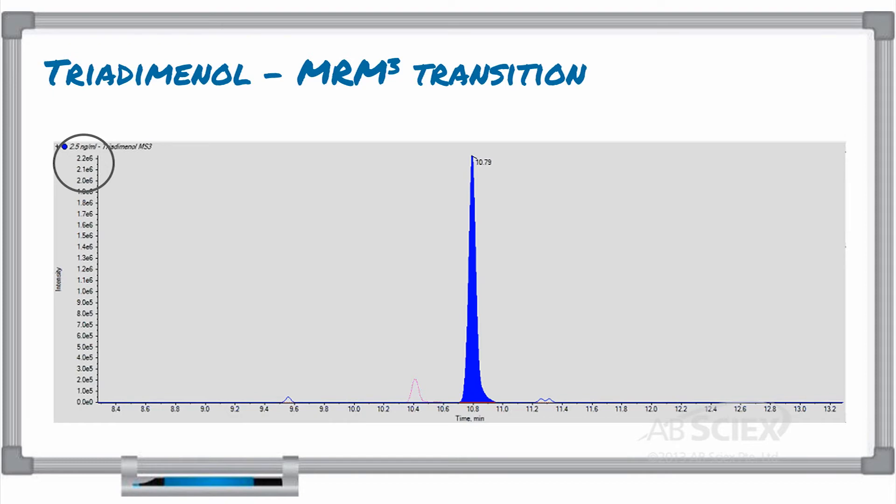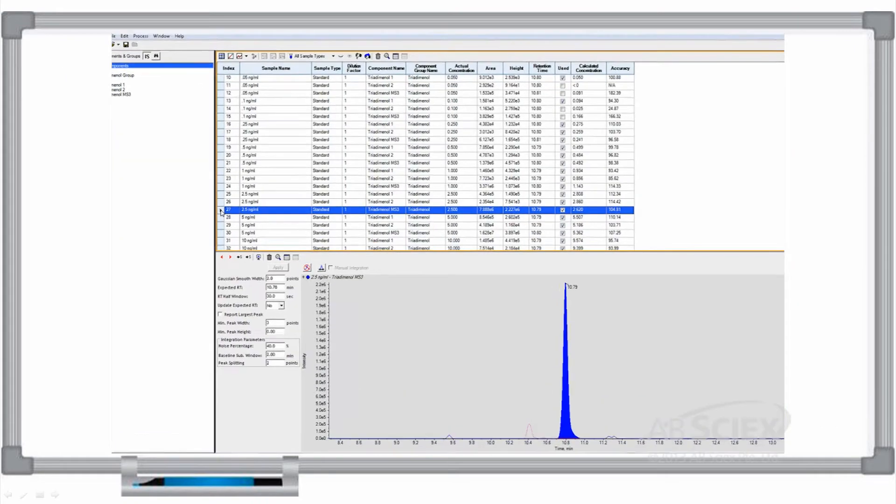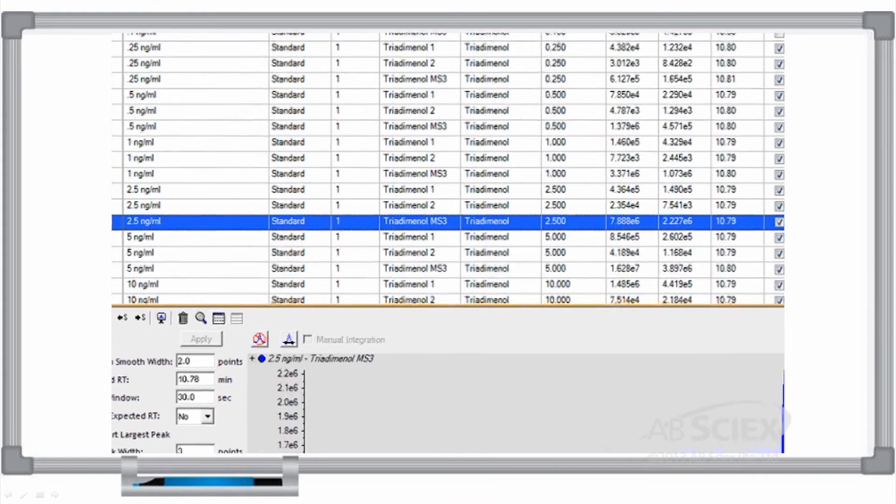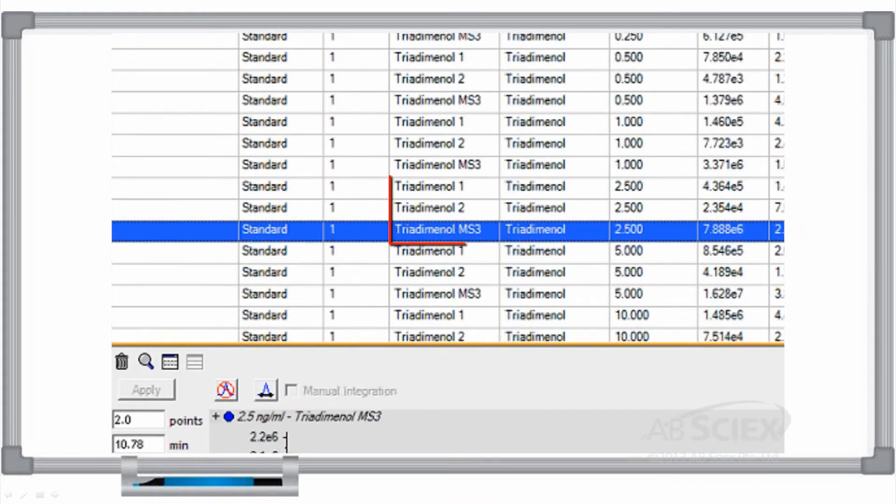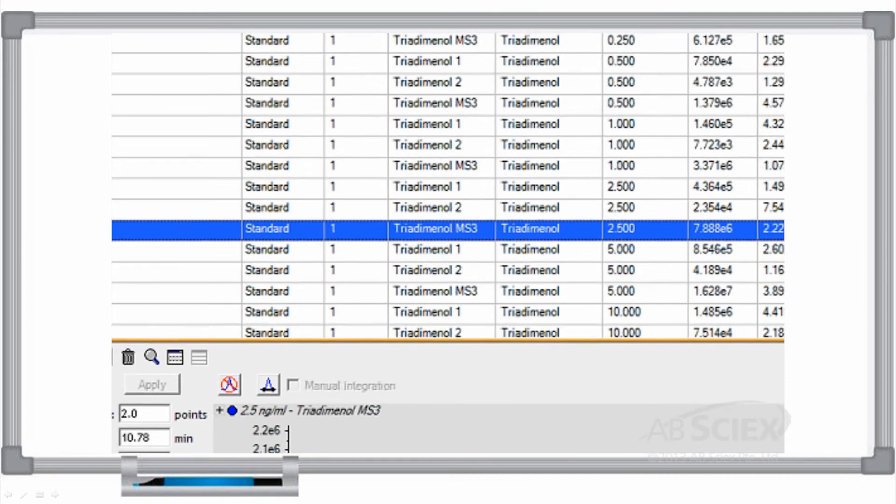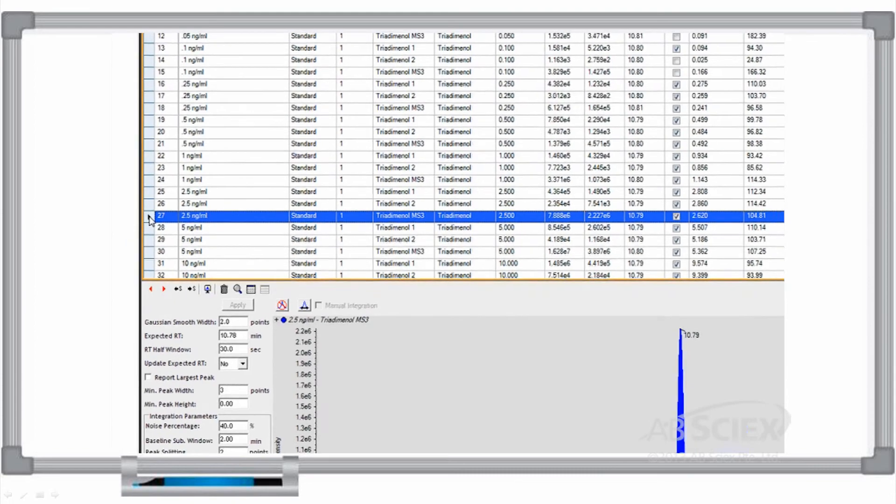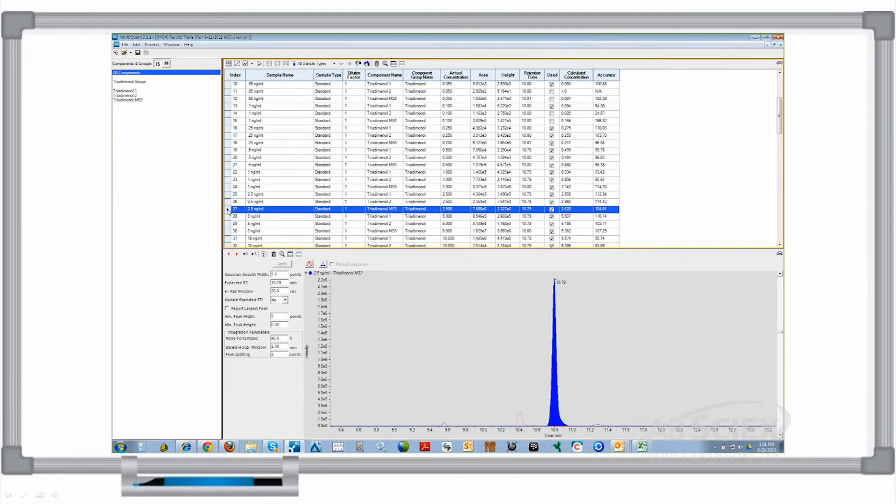Keep in mind that these MRM-cubed data can also be used to perform quantitative analysis. In the example of triadminol, we monitored two MRM transitions and one MRM-cubed transition in our analysis. Here we show the multi-quant results table we created which contains the results for our batch for both MRM transitions and MRM-cubed transition, identified in this table as triadminol MS3.